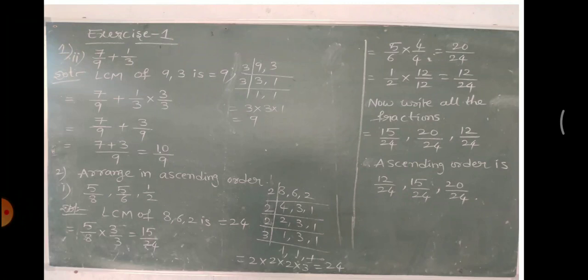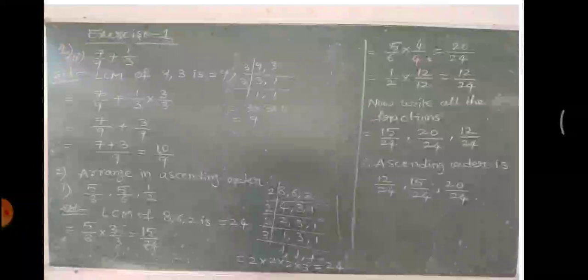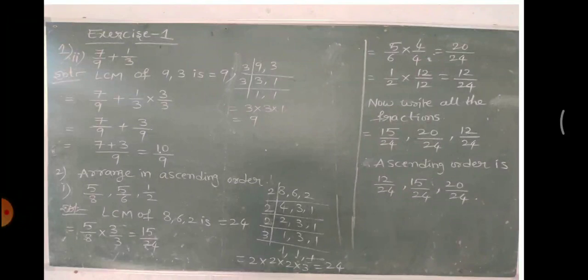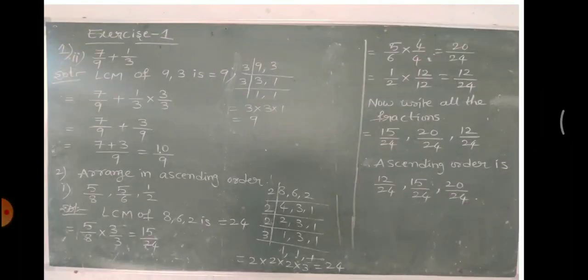Using the LCM division process for 8, 6, and 2: divide by 2 — giving 4, 3, 1; divide by 2 again — giving 2, 3, 1; divide by 2 — giving 1, 3, 1; divide by 3 — giving 1, 1, 1. Multiplying: 2 × 2 × 2 × 3 = 24. The LCM of 8, 6, and 2 is 24.